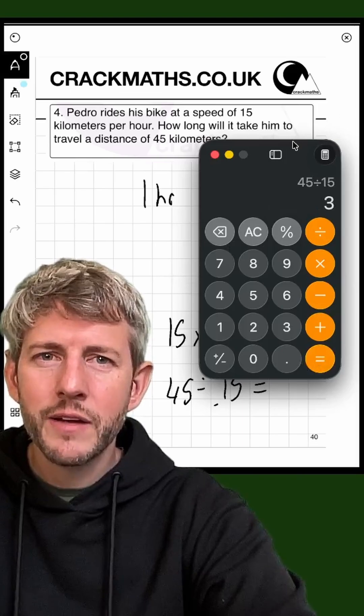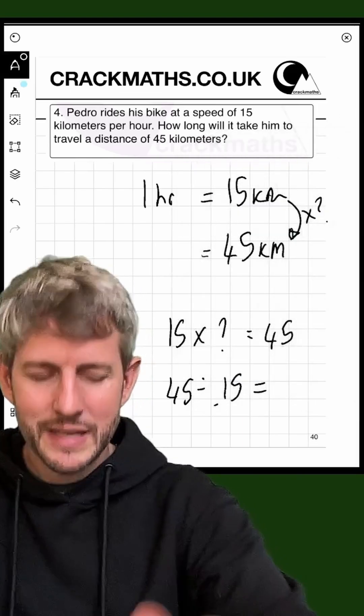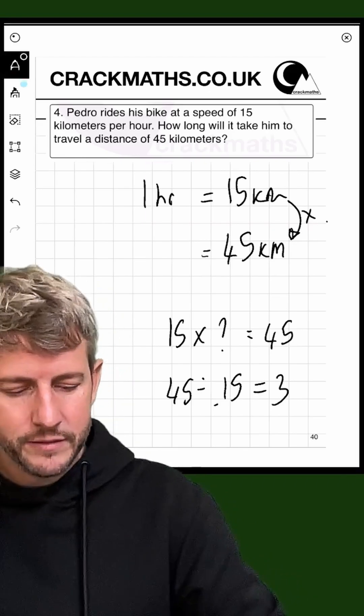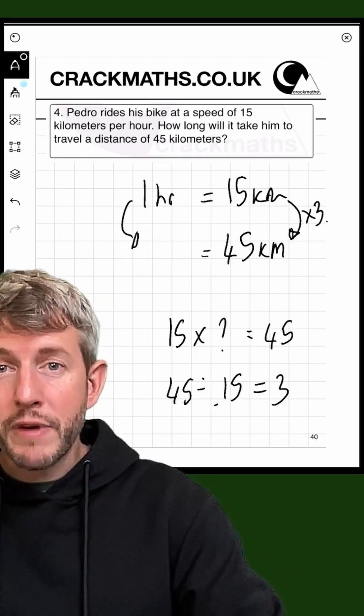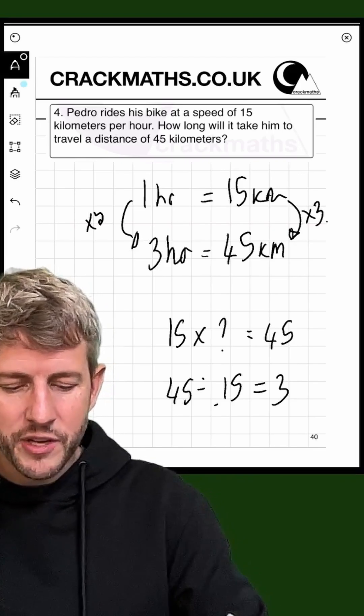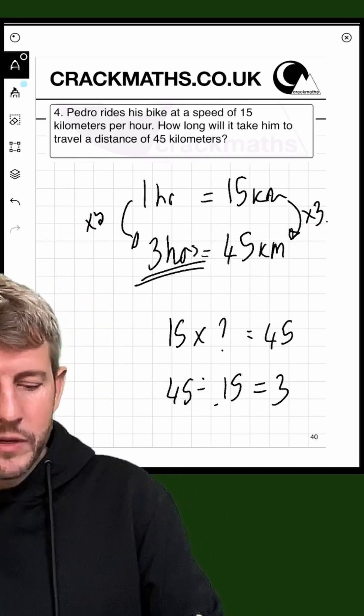So here we go. I can put that back over here and write down 3. So that means that we're doing 3 lots of 15. So that means we'll want 3 lots of 1 hour. So the answer to this question will be 3 hours.